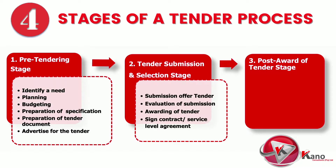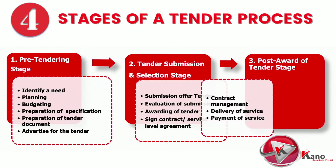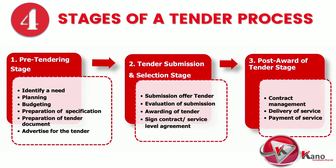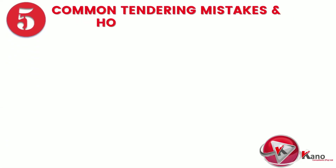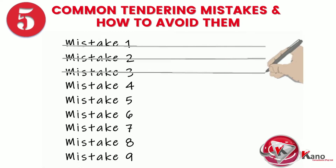The successful bidder will be notified and awarded the tender, and may be required to sign a contract or service level agreement with the government institution. The final stage revolves around the management of the contract, where the appointed company provides the required service and the government institution compensates them as agreed. These are general steps — some government departments may include additional steps and internal controls.